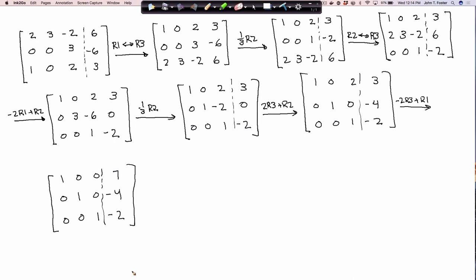What's left on the right-hand side there is the solution. So my solution vector is x equals 7, minus 4, minus 2. In other words, x1 equals 7, x2 equals minus 4, x3 equals minus 2.